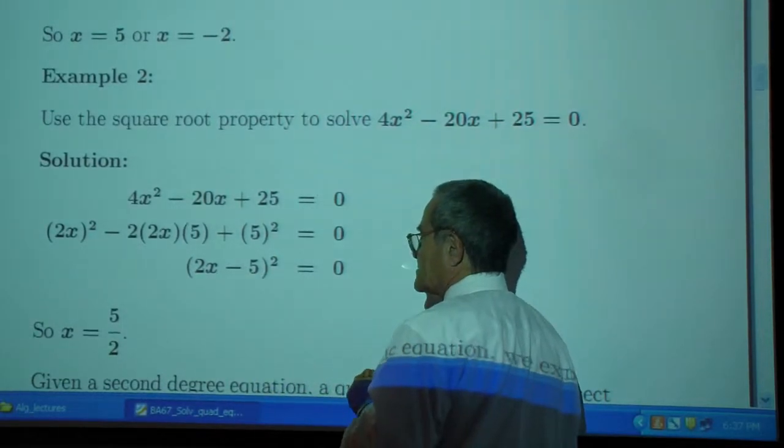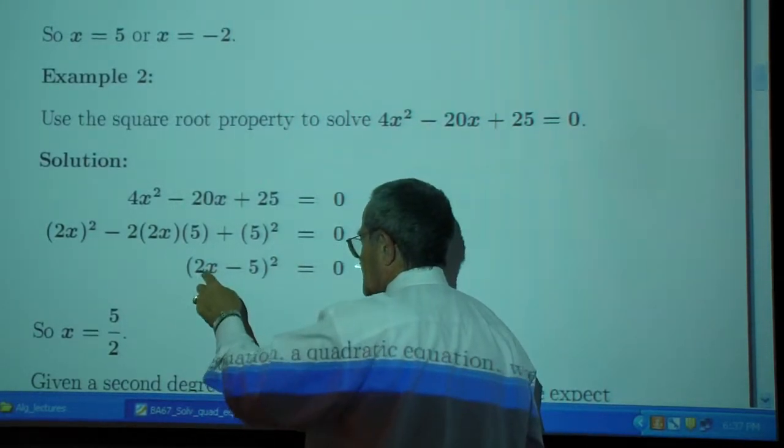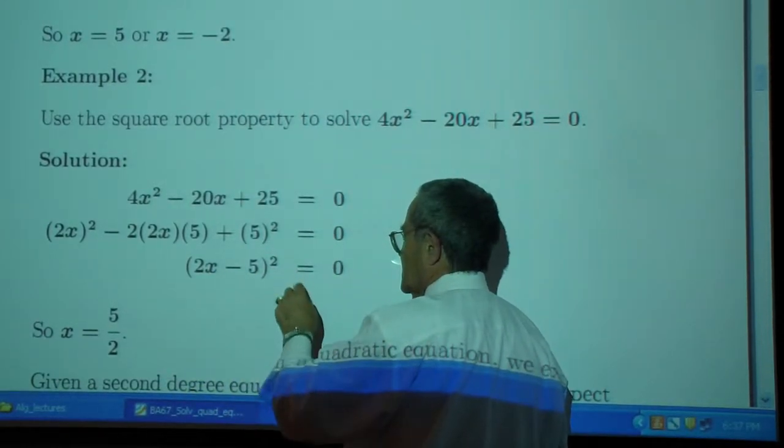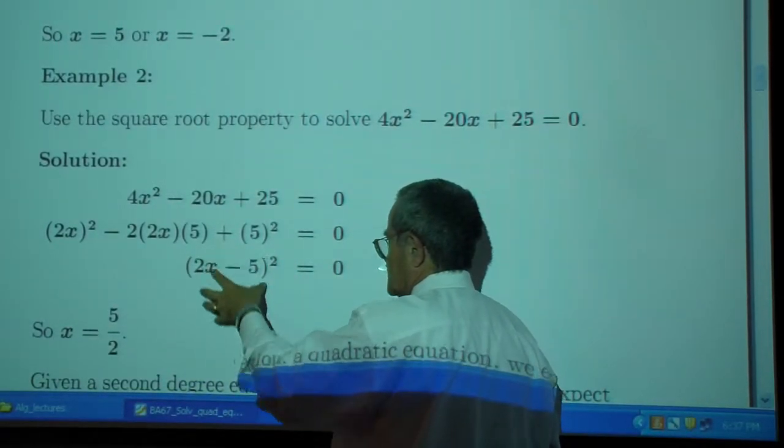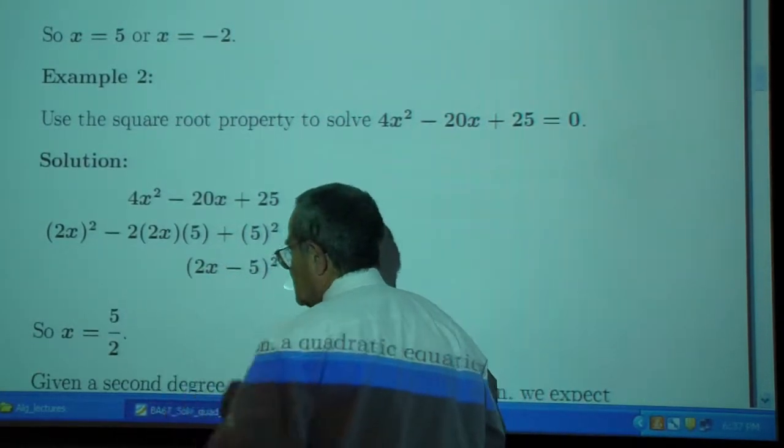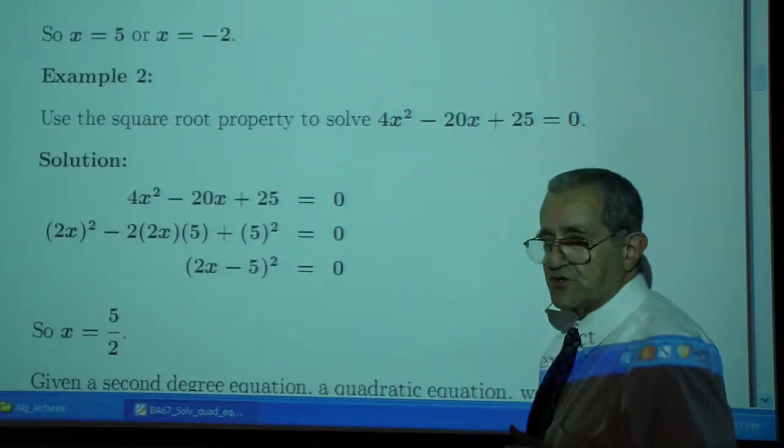Take the square root of both sides. You get just this 2x minus 5, which is 0. The square root of the quantity squared is just the quantity. Add 5 to both sides, divide by 2. You get x, which is 5 over 2.